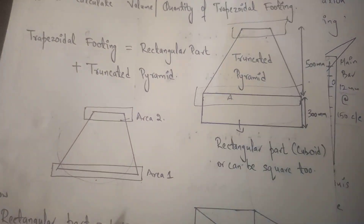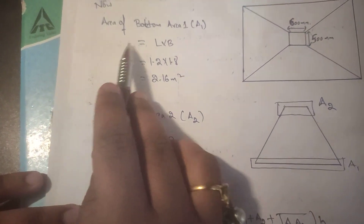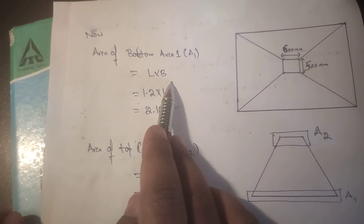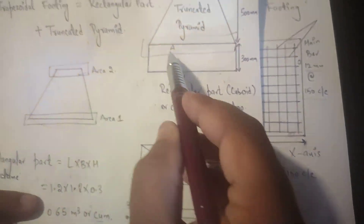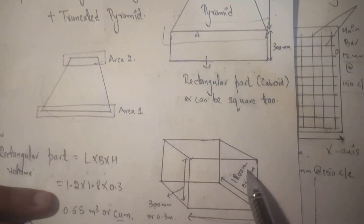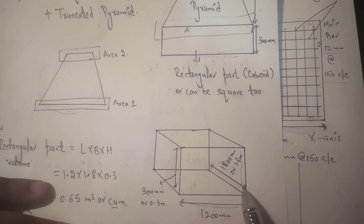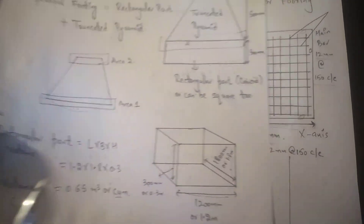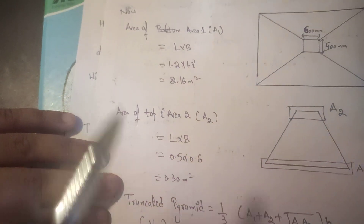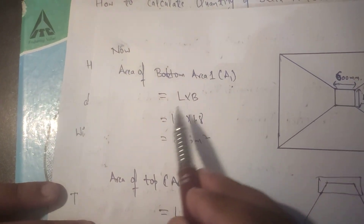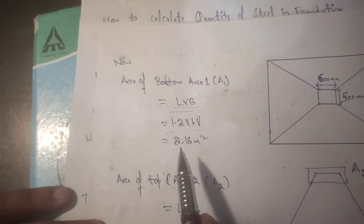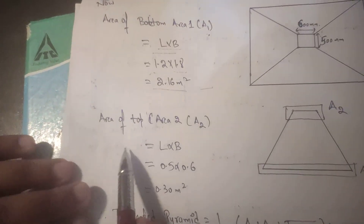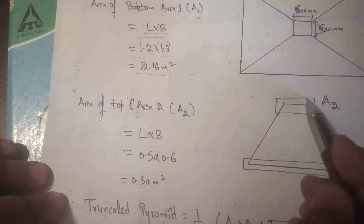The bottom area A1 is calculated as length × breadth = 1.2 × 1.8 = 2.16 square meters — the same dimensions as the rectangular part. Then Area 2 (the top area of the pyramid) is calculated as length × breadth of the column dimensions.